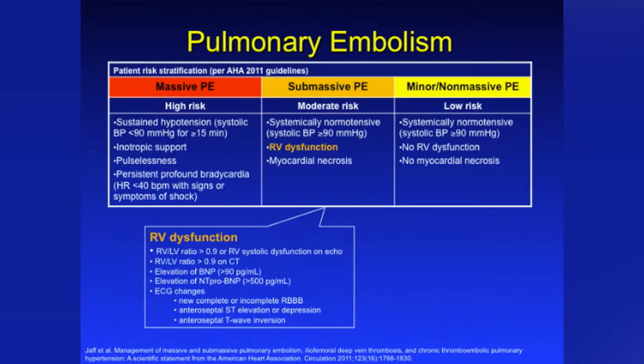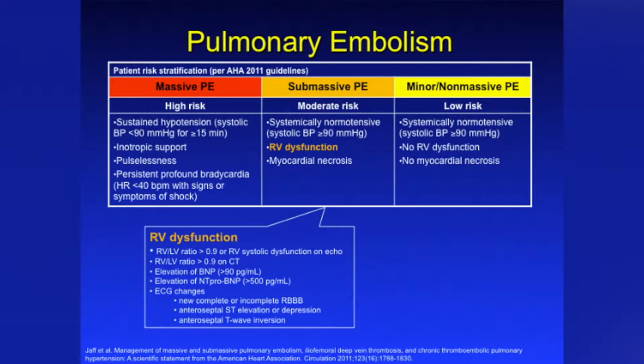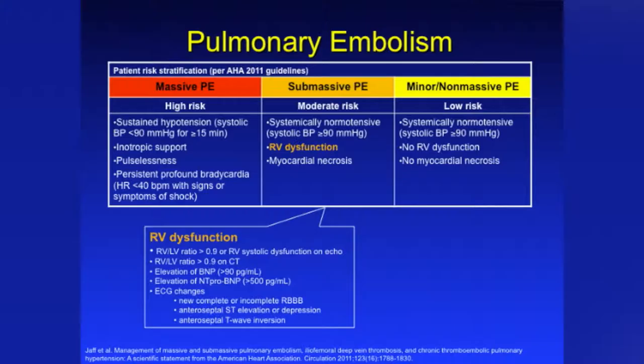There are three major categories of pulmonary embolism. You have minor or non-massive PE — basically a patient with some shortness of breath, no heart strain, and no evidence of myocardial necrosis. Then you have sub-massive PE: these patients are normotensive but have right ventricular dysfunction, with an RV to LV ratio greater than 0.9 on echocardiogram or CT scan, and may have elevated cardiac enzymes or EKG changes. Then you have massive PE — a patient in extremis, hypotensive, requiring inotropic support, possibly presenting in a code situation.